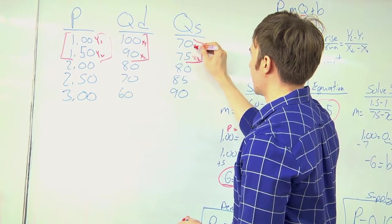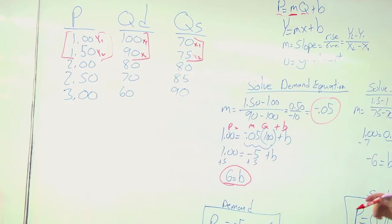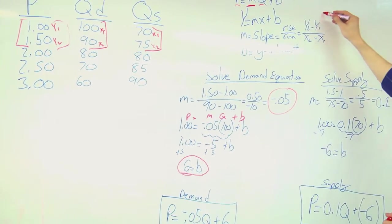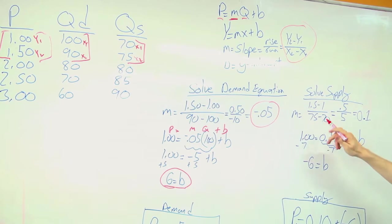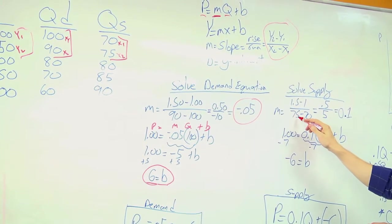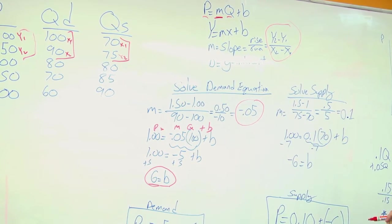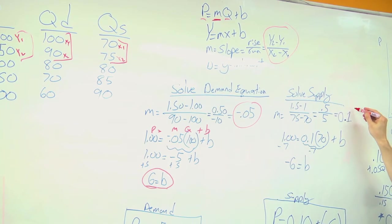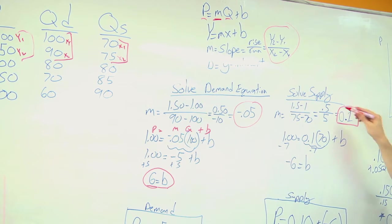So it'll be my x2 and my x1. I'll plug those in to solve for my equation for slope of a dollar 50 minus 1 divided by 75 minus 70 equals 0.1. This is my answer for slope.